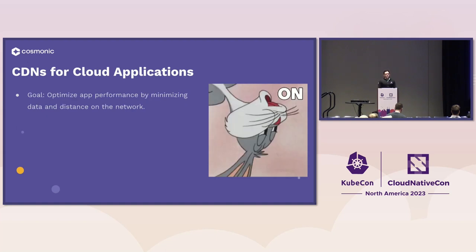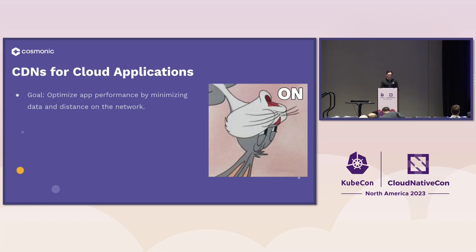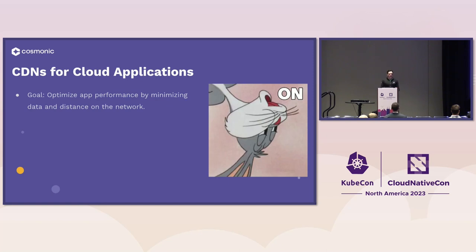I want to take a step back and talk about why I'm here. The goal — what I work on day-to-day and why I've been working on WasmCloud so long — is I want to be able to optimize applications from a networking perspective to reduce the amount of data and the distance that it has to travel on a network. The vast majority of the time it takes for an application to respond is just the time it takes to travel from point A to point B. I want to take my backend like any platform-agnostic front-end static asset and deploy it everywhere to get that network optimization.